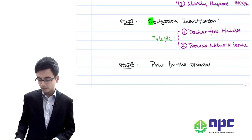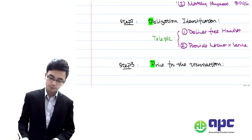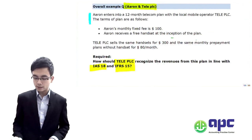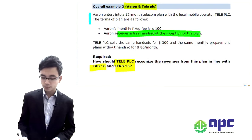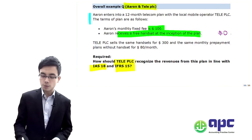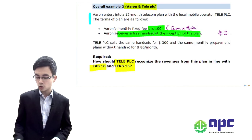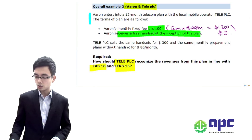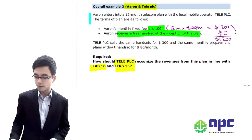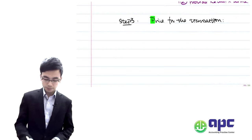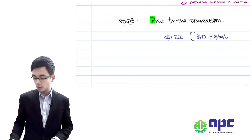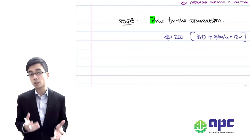Step three is the transaction price — that's P. Let's determine the price for the transaction. We're told the price for the handset is free of charge, so the price is zero. Because of this contract, Errant is required to pay $100 per month. So 12 months times $100 per month gives us $1,200 in total. The total transaction price as a result of this contract is $1,200.